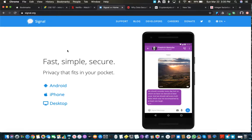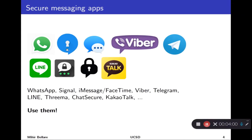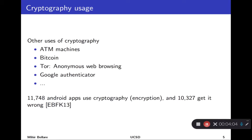Here's what Signal looks like — you can go here and download it to your phone, and from there you can also set up an app on your computer. Many of us use this quite routinely for communications. There are many other uses of cryptography. Every time you use an ATM machine, you're using cryptography. The well-known Bitcoin cryptocurrency is founded on cryptography. When you browse the internet, you could use an anonymous browser like Tor, which makes sure that your location is hidden. There was an estimate that over 11,000 Android apps use some form of cryptography, but also over 10,000 actually get it wrong — which is one of the reasons we're going to be studying it.